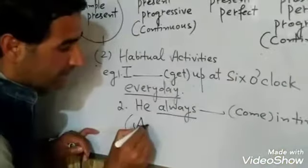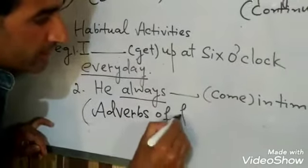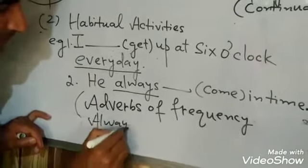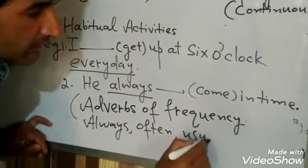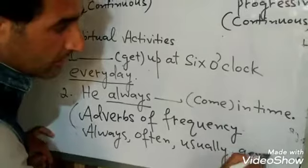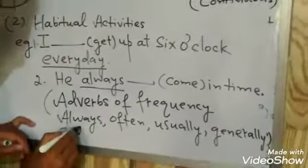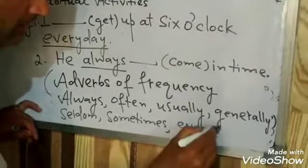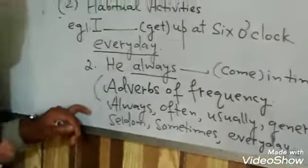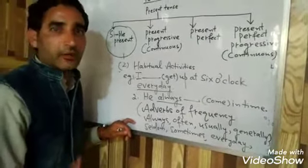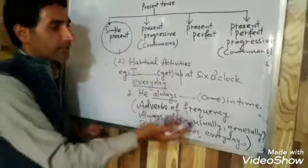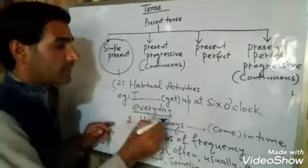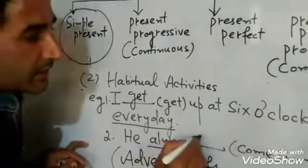Adverbs of frequency are normally used in such sentences. These include: always, often, usually, generally, seldom, sometimes, every day, once a day, every month, every year, every morning. Whenever you find these adverbs of frequency, you should use simple present. For example: 'I get up at six o'clock every day.' 'He always comes in time.'